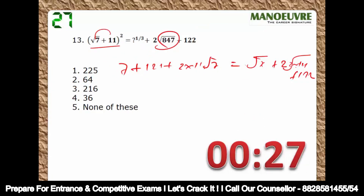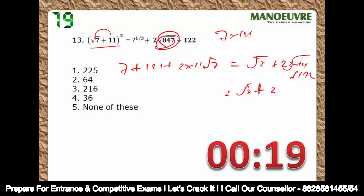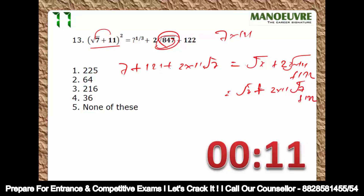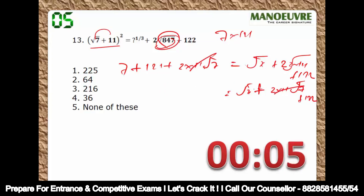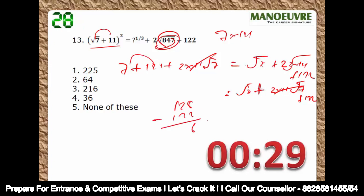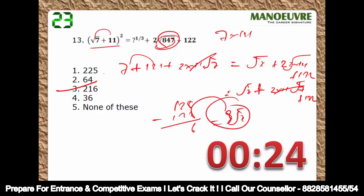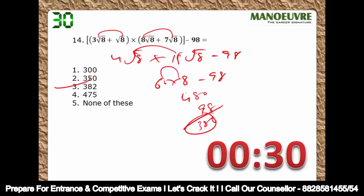This is nothing but 7 × 121. This is 2, into 11√7 + 122. This part and this part get cancelled. You're left with 128 minus 122 = 6, and this is cube root basically. So cube root of 216 is the answer — 6 cubed = 216. No problem, fine — this is my way to solve the question.